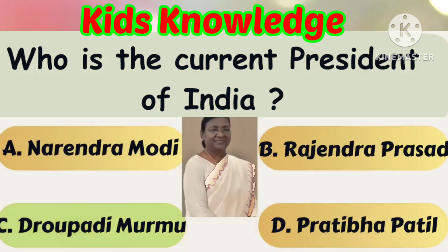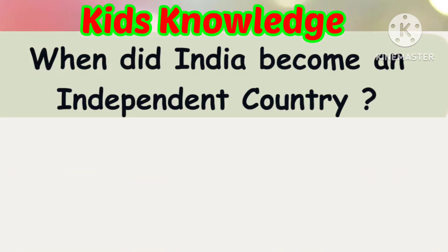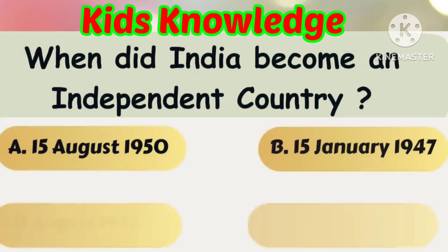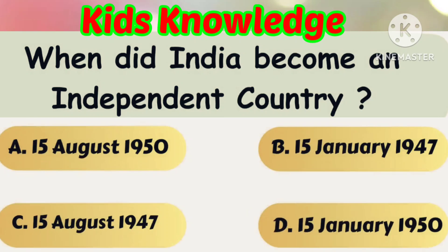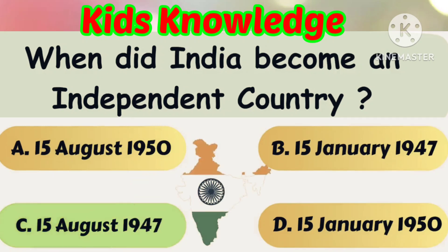Question number 47. When did India become an independent country? The correct answer is option C: 15th August 1947.